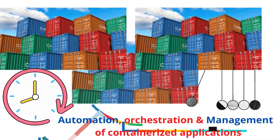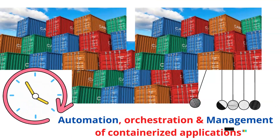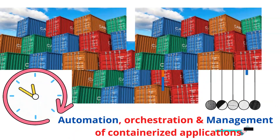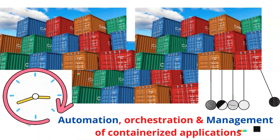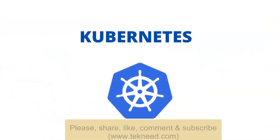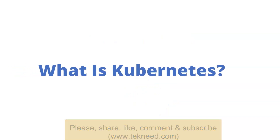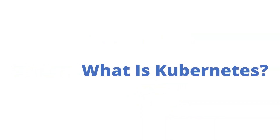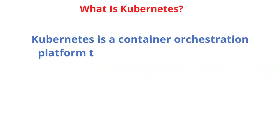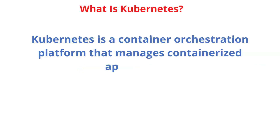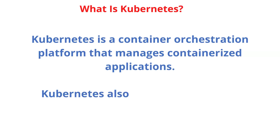Especially now that heavy applications like core banking applications are being containerized, hence the need for an orchestration, automation, and extremely high availability tool that can manage hundreds and thousands of containerized applications. One such tool is what we're about to learn, which is Kubernetes. So what is Kubernetes? Kubernetes is a container orchestration platform that manages containerized applications.